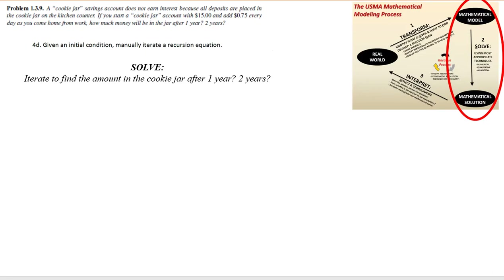We want to iterate in order to find the amount in the cookie jar after one year and after two years, and this result would be a mathematical solution. To get this result, we have to use our mathematical model that we developed in the transform step, which is p naught equals 15 and p sub n equals p sub n minus 1 plus 0.75.